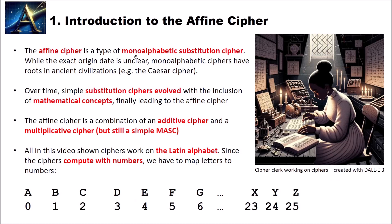The affine cipher is a type of monoalphabetic substitution cipher. While the exact origin date of the cipher is unclear, monoalphabetic ciphers in general have roots in ancient civilizations, for instance the Caesar cipher. Over time simple substitution ciphers evolved with the inclusion of mathematical concepts, finally leading to the affine cipher. The affine cipher is a combination of an additive cipher and a multiplicative cipher. But as you will see, it's still a simple monoalphabetic substitution cipher, meaning every plaintext letter is encrypted to the same ciphertext letter.